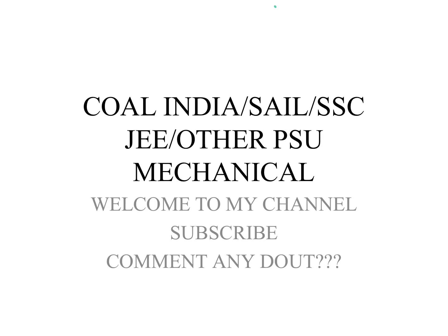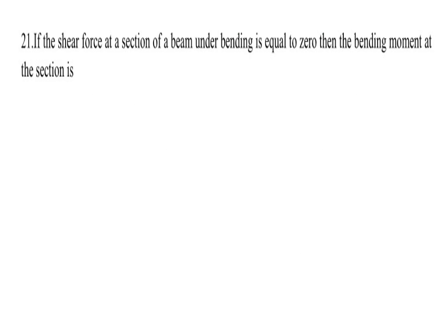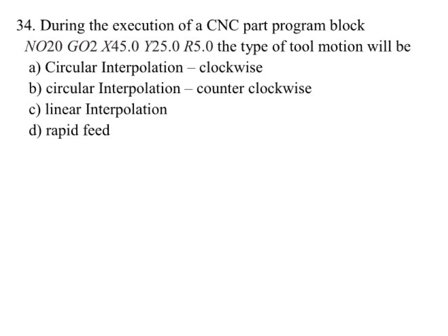The question is: if the shear force at a section of a beam under bending is equal to zero, then the bending moment at that section is maximum. When shear force is zero, bending moment is maximum.